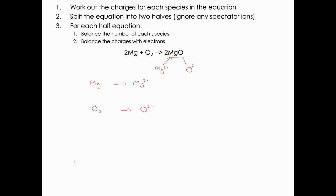Now balance each half equation. For magnesium: one Mg on each side, so that's fine. Balance the charges — on the left the charge is zero, on the right it's 2+. Electrons are negative, so add them to the most positive side, which is the right. To go from 2+ to zero, add two electrons: Mg → Mg2+ + 2e-. The electrons are on the right-hand side, so we are losing electrons — this is the oxidation half equation.